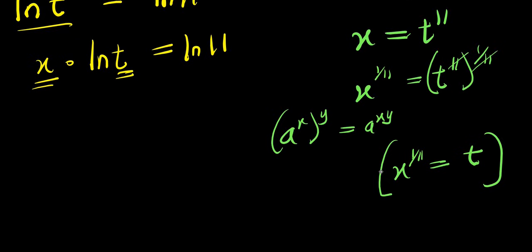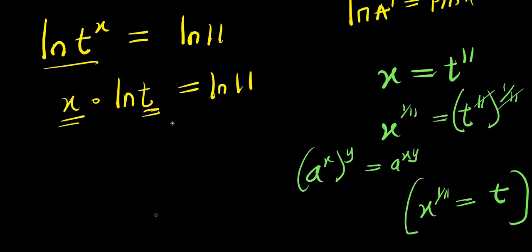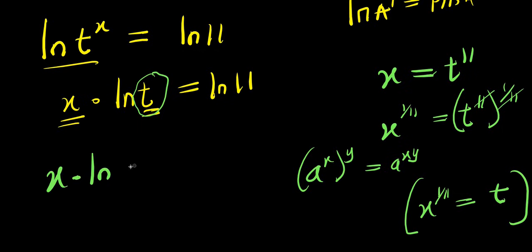So if x power 1 over 11 equals t, I will come over here and replace this t with x power 1 over 11. I have x times ln of x power 1 over 11 equals ln 11.